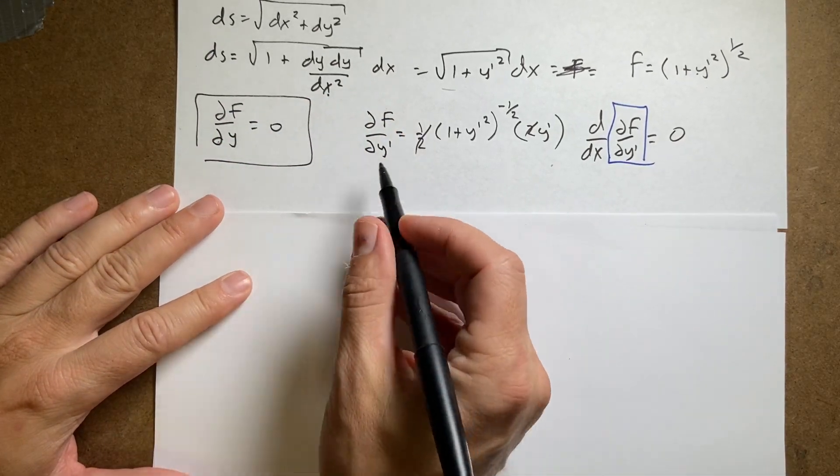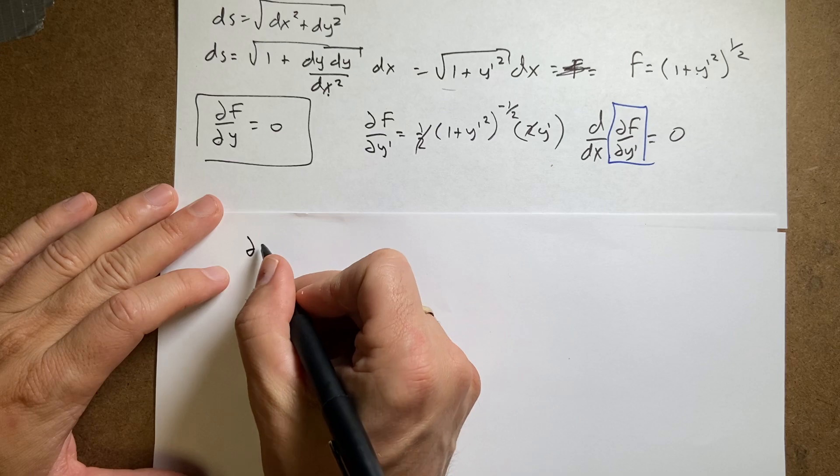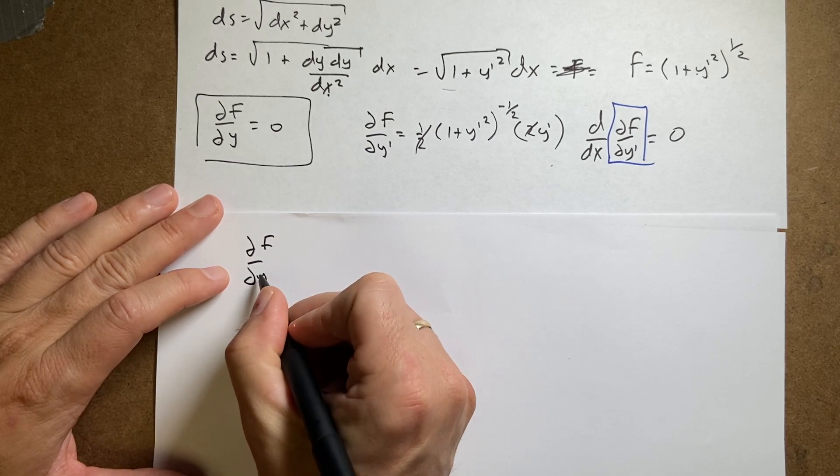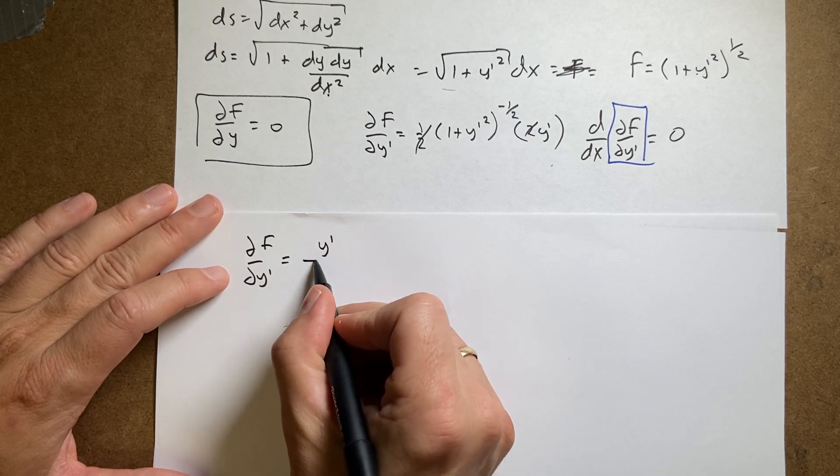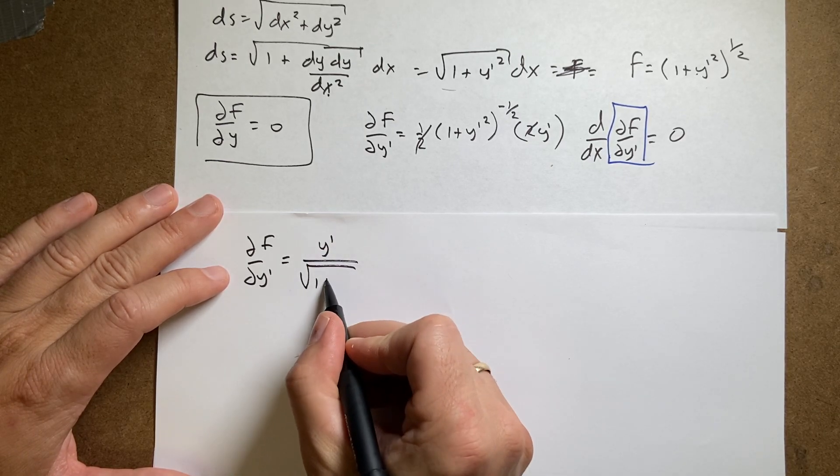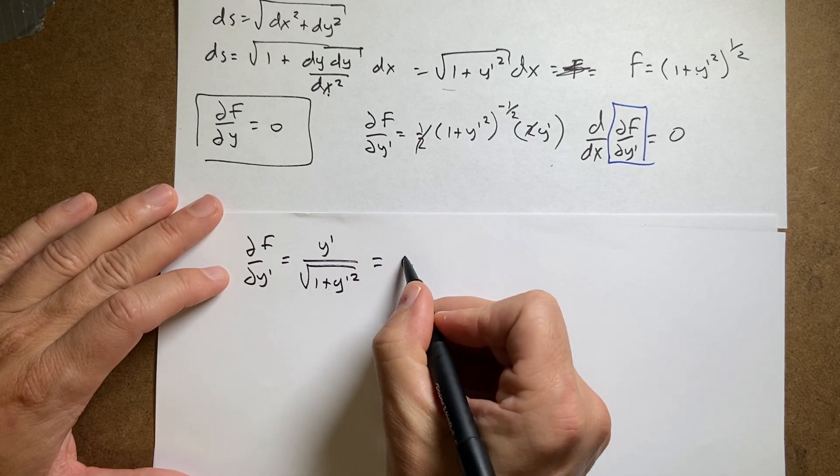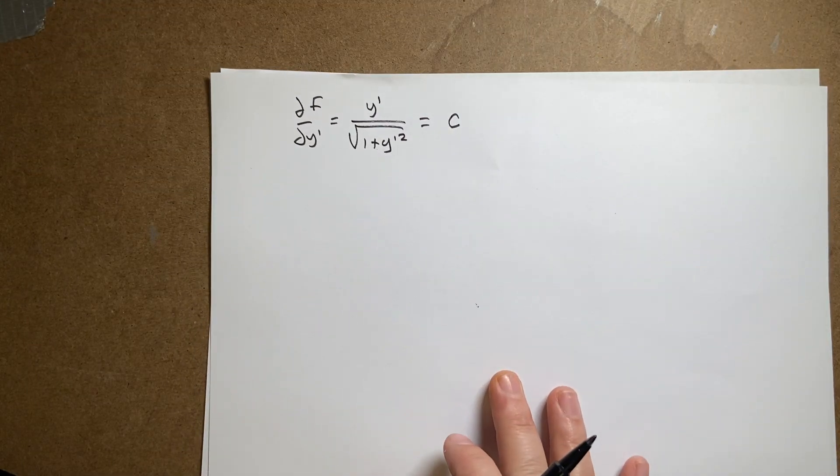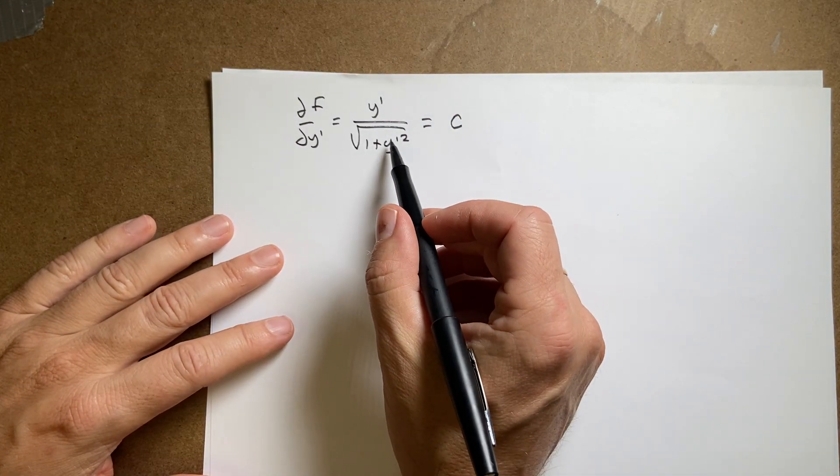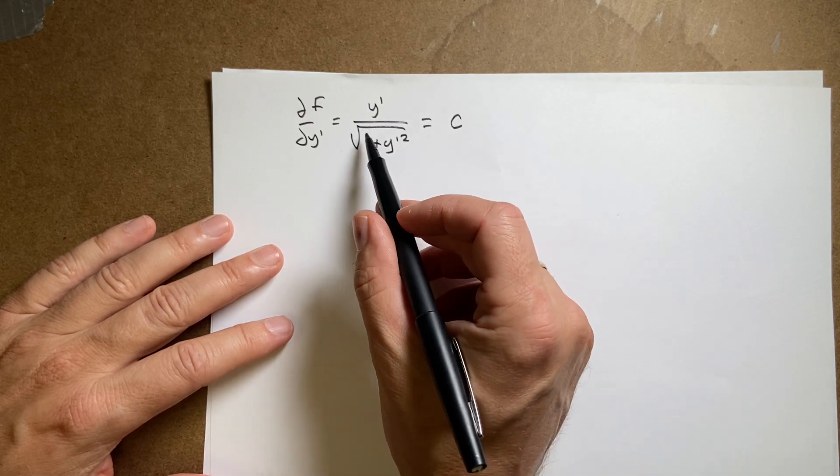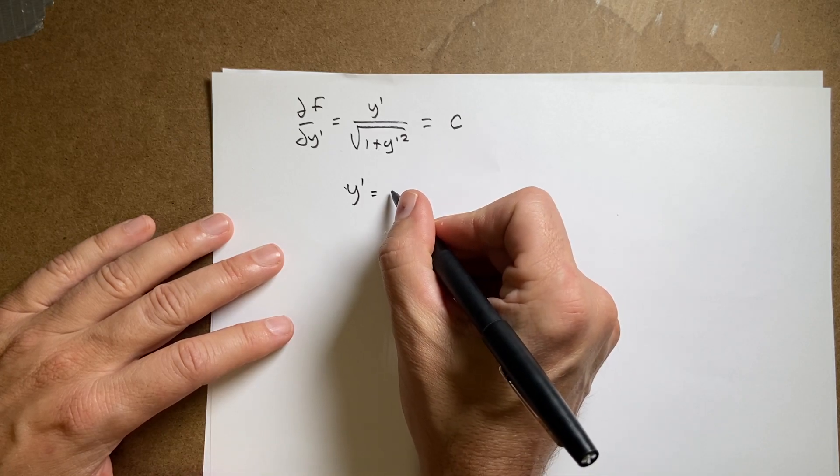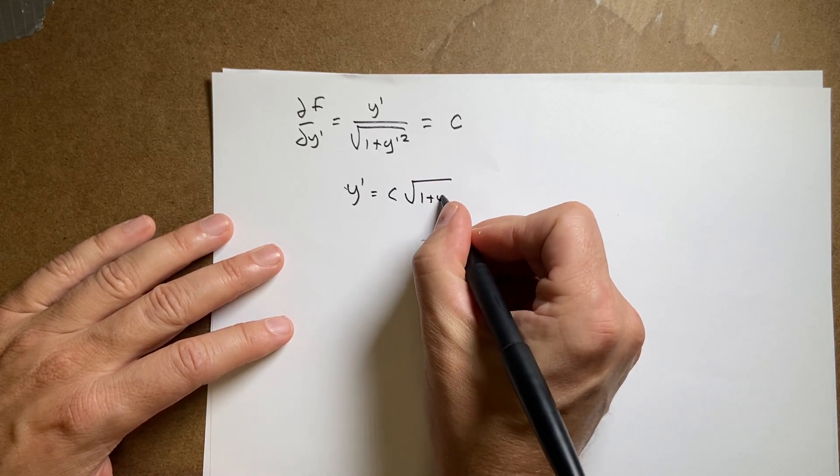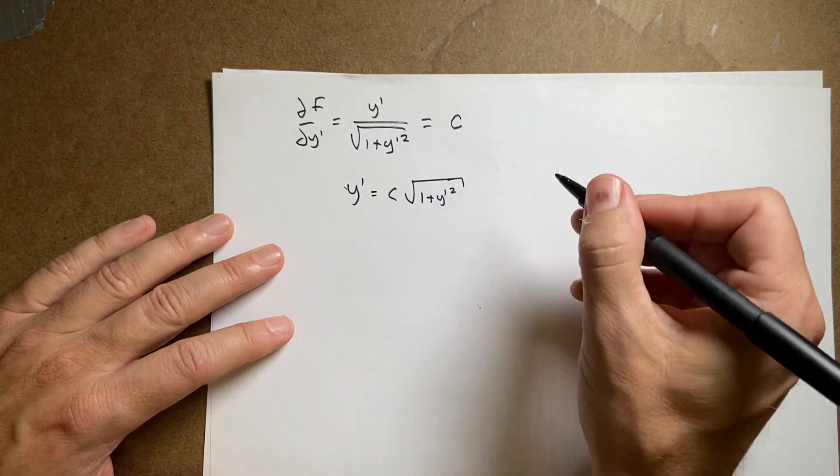Okay, so let me move to my next page, and I will say this. I have my function, partial of f with respect to y prime, it's going to be this stuff. I'm going to write it as y prime divided by the square root of 1 plus y prime squared equals c, some constant. So, let's just multiply both sides by this to get rid of the fraction, and I get y prime equals c, the square root of 1 plus y prime squared.